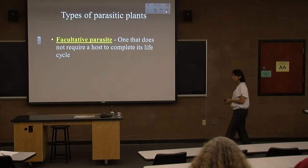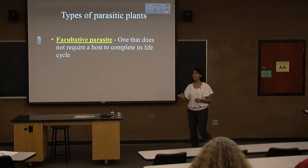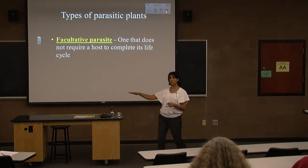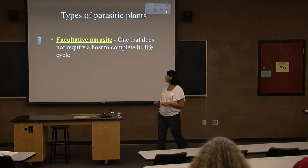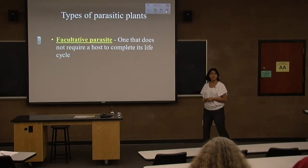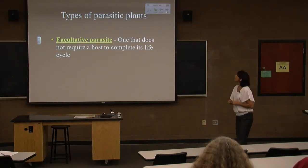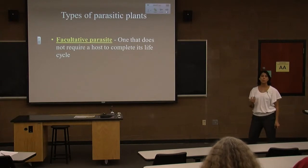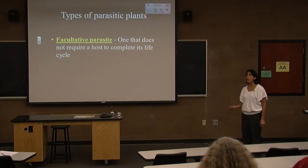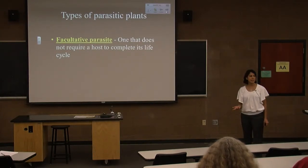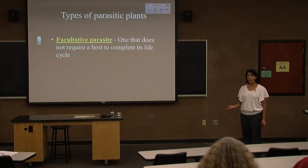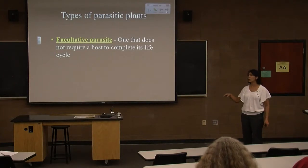The only true parasitic plants are those that have a connection with a host plant through a root-like structure. There are different types. A facultative parasite does not require a host to complete its life cycle — it will survive in the soil by itself, but if there is an appropriate host nearby, it's easier to steal than to get your own.